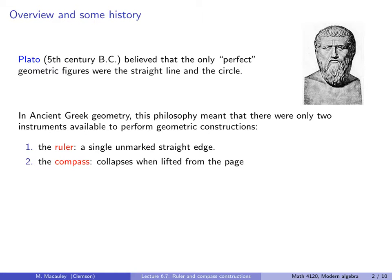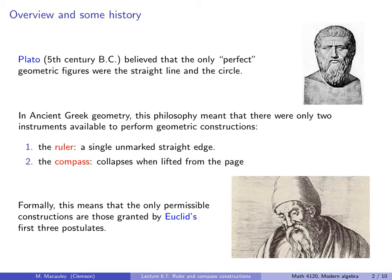There was the ruler, which is a single unmarked straight edge, and there was a compass. The compass collapses when lifted from the page, so it's not like the compasses you may have used in elementary school, where you can pick it up and use it to measure distances elsewhere. Formally, having only a ruler and compass means that the only permissible constructions are those granted by Euclid's first three postulates.